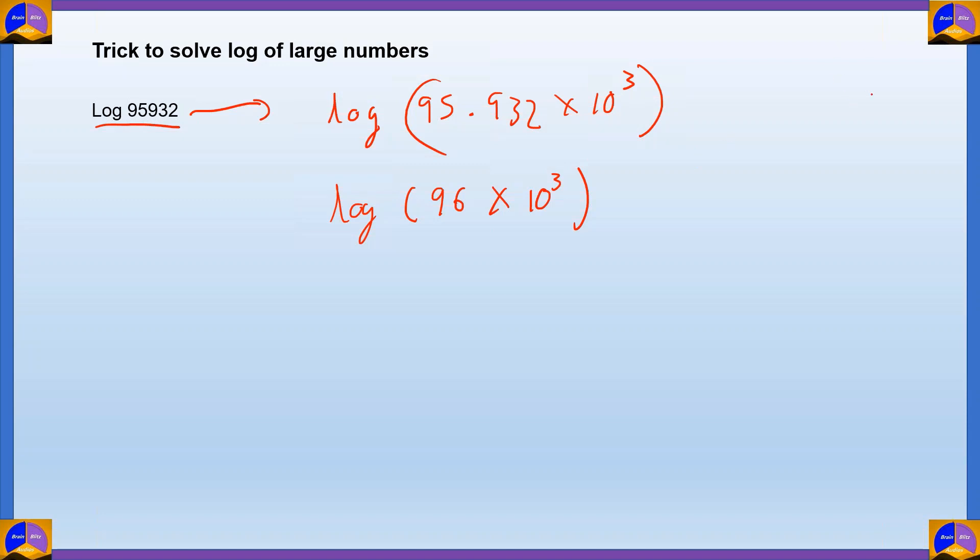Now, I'm going to do prime factorization of 96 in terms of 2, 3, 7. So, 96 by 2 gives us 48. 48 by 2 gives us 24. 24 by 2 gives us 12. 12 by 2 gives us 6. 6 by 2 gives us 3. 3 by 3 gives us 1. So, 2 into 2, 2 into 2, 2 into 2, 2 into 3. The whole of this, I can write that as 2 raised to 5.